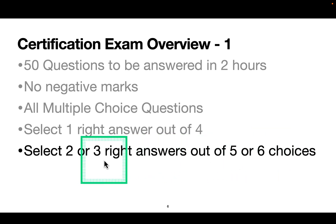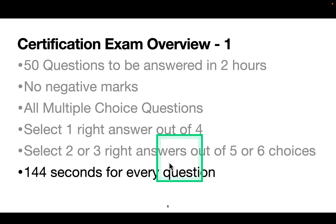I didn't see much three out of six. Usually there were 80 or 90 percent was one out of four, and a few cases were select two out of five or six, if I remember correctly. If you do the math, you have 144 seconds for every question. That is slightly more than two minutes per question. I'll talk about strategy later, but this is roughly how much time you have.